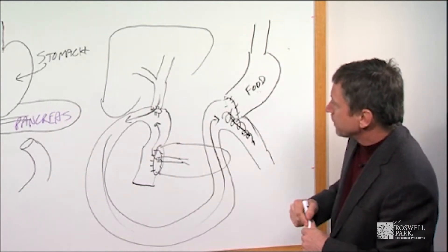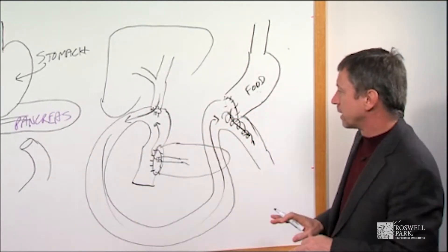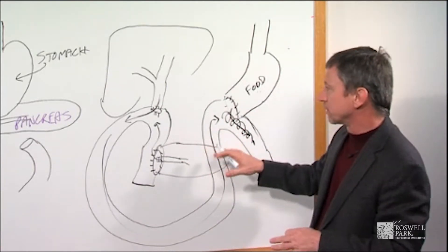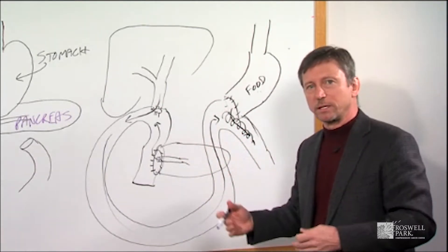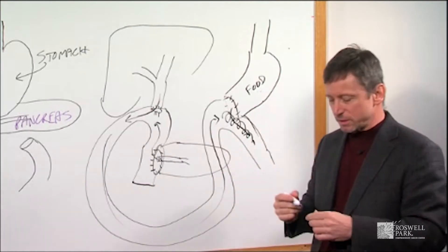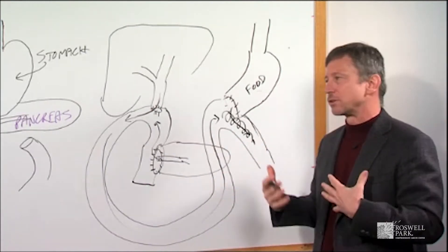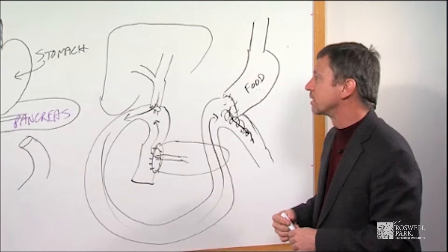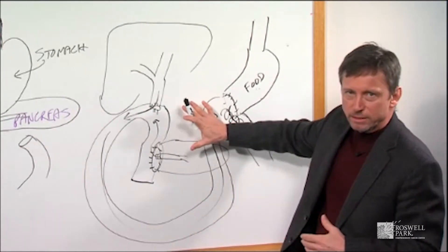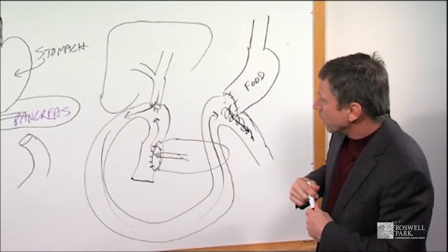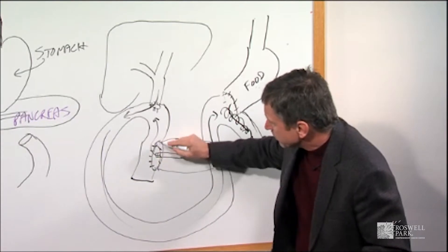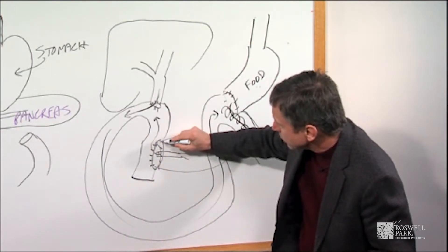Now there's a couple of things I want to mention here. First of all, in terms of the potential problems that can happen after surgery. Now the Whipple procedure is a complex surgery. The surgery can take, as I said, anywhere from six to eight hours, and this is generally the second part of the procedure.